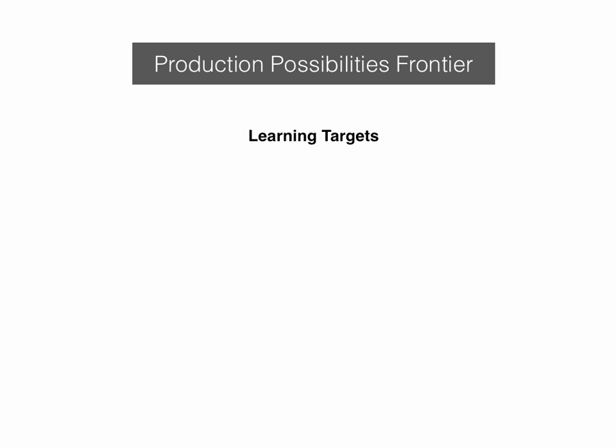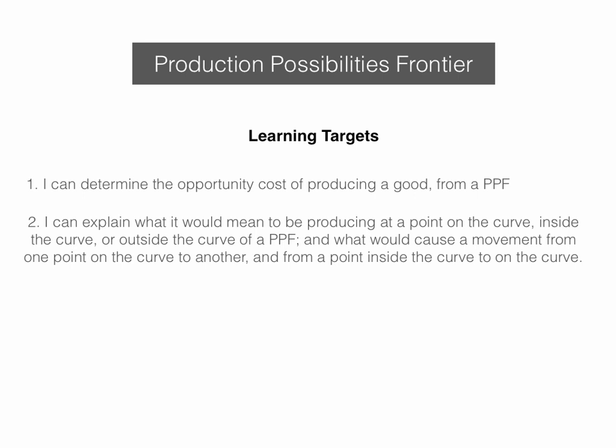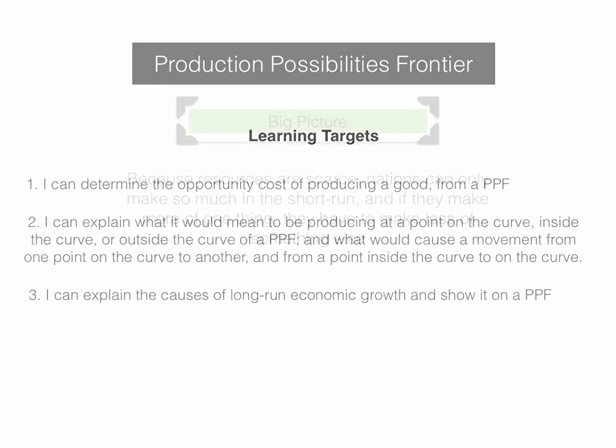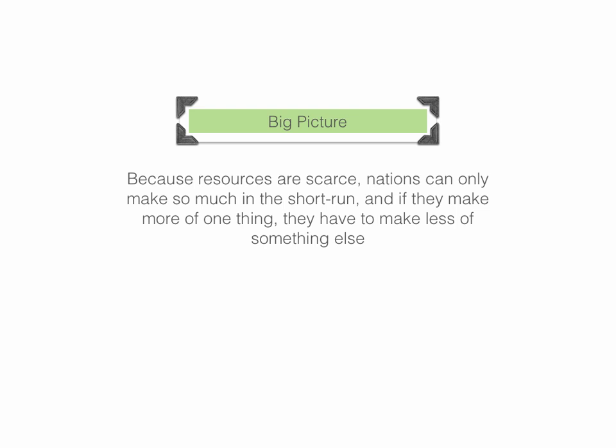Hi and welcome to this lesson on the production possibilities frontier. There are three learning targets. First, I can determine the opportunity cost of producing a good from a PPF. Second, I can explain what it would mean to be producing at a point on the curve, inside the curve, or outside the curve of a PPF, and what would cause a movement from one point on the curve to another, and from a point inside the curve to on the curve. Third, I can explain the causes of long-run economic growth and show it on a PPF.